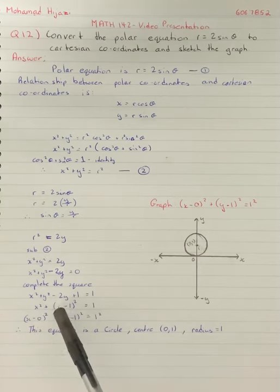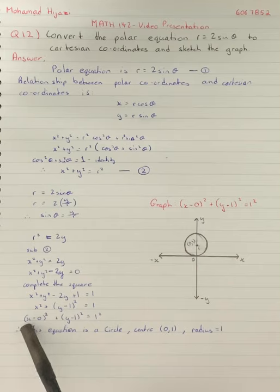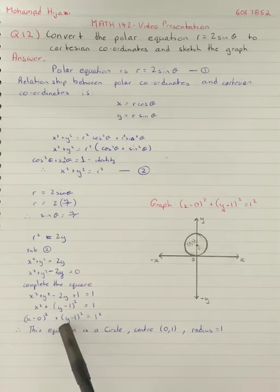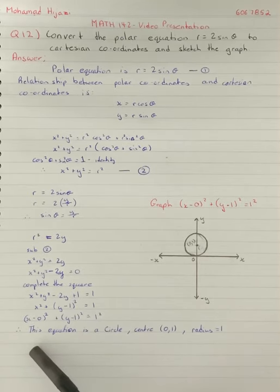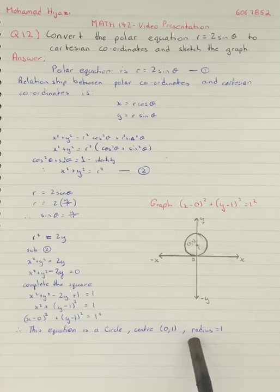This is in the form of a circle equation: (x - 0)² + (y - 1)² = 1. Therefore, the equation is a circle with center (0, 1) and radius 1.